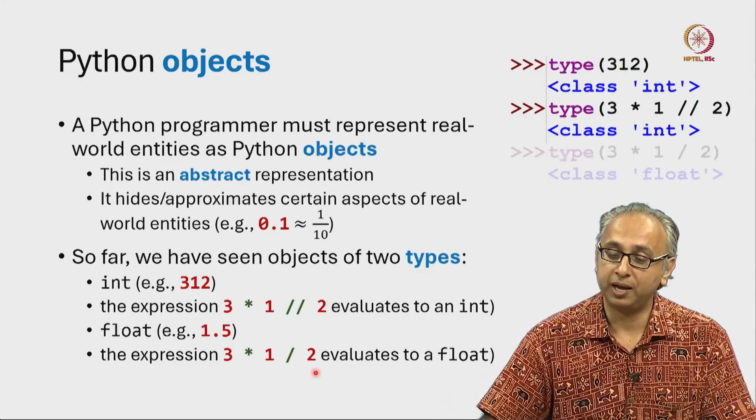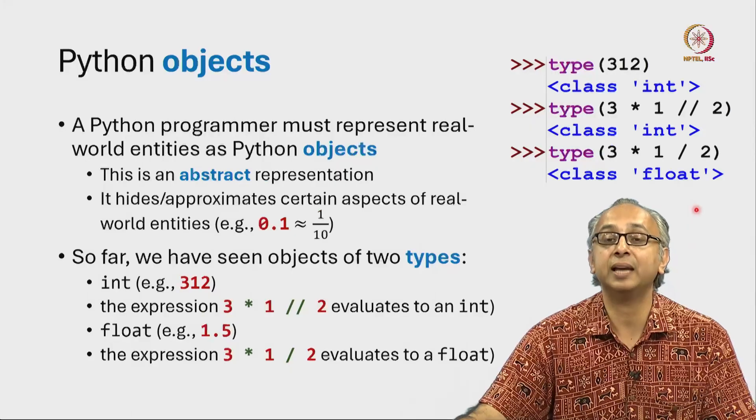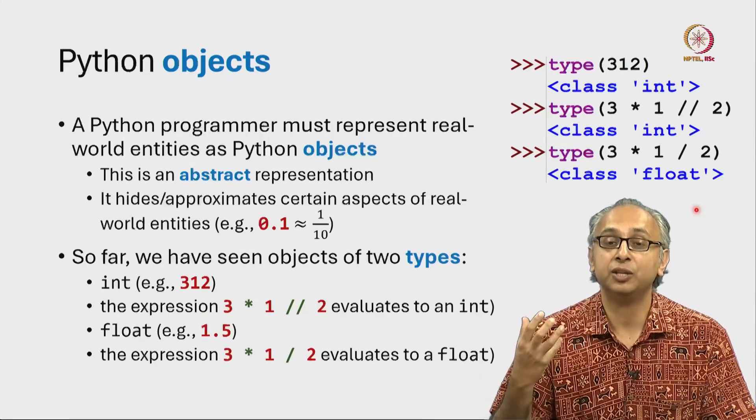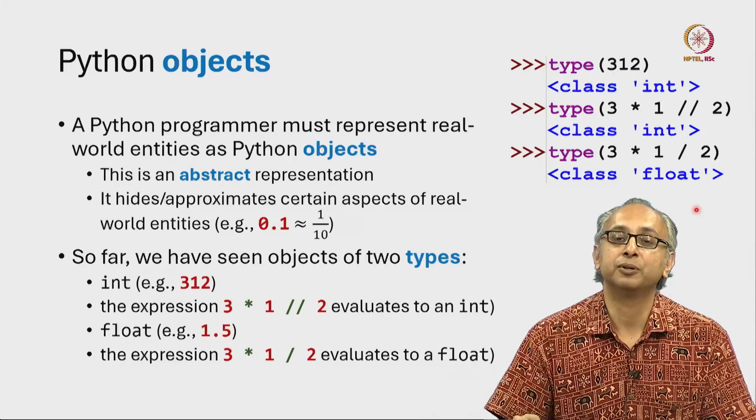And so when we ask in the REPL what is the type of this expression? Again it will first evaluate the object 1.5 which is of type float.